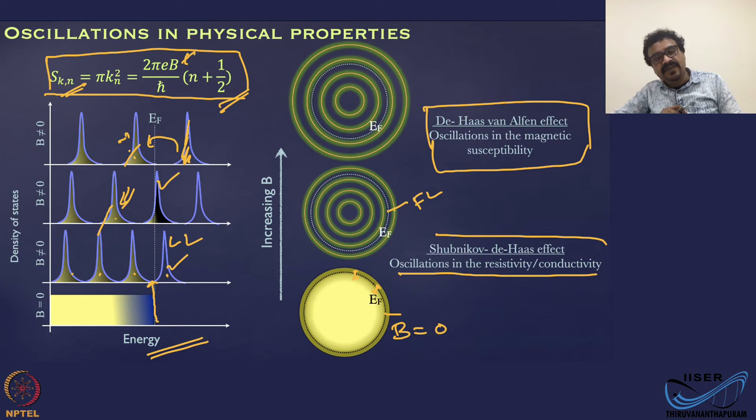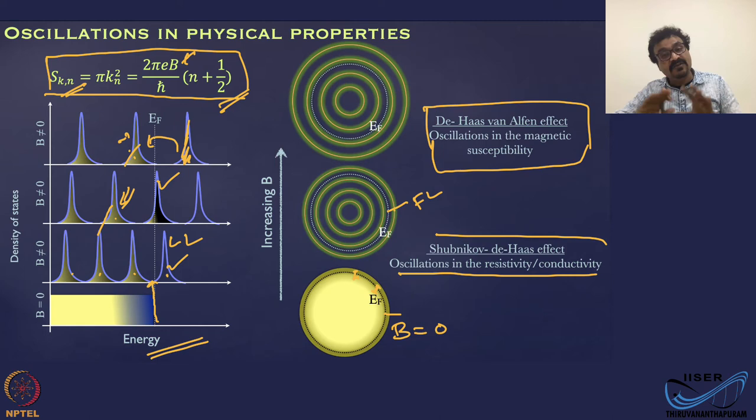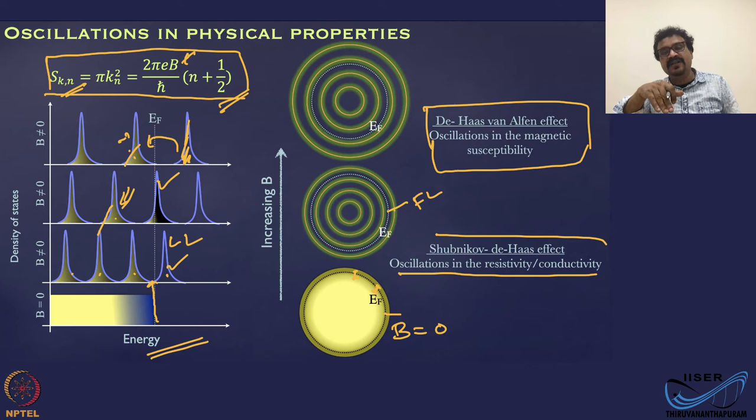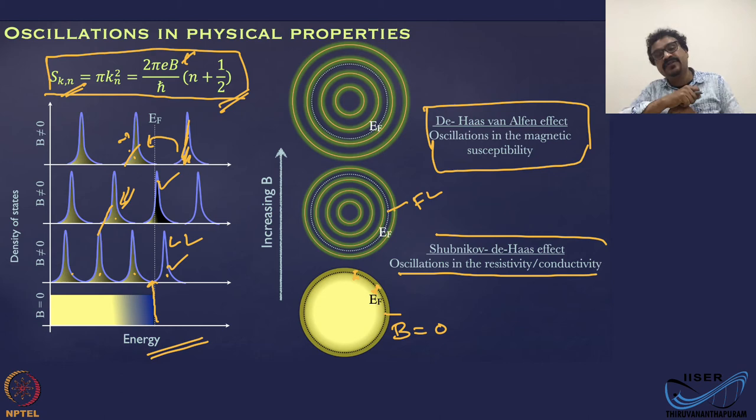In summary: when you ramp the B field, the Landau levels expand while the Fermi level remains fixed. When a Landau level passes through the Fermi level due to increasing B field, all the electrons in that Landau level jump back to the one below — which has also expanded and has enough space to accommodate those electrons.